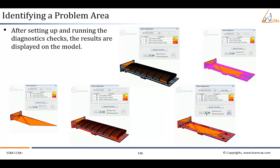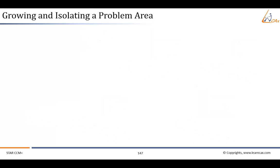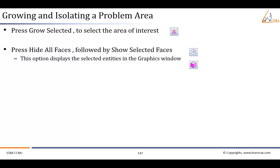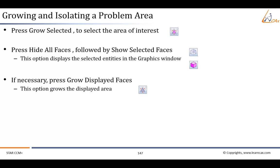Next we have to grow and isolate the problem area. Once you have selected a suitable face, edge, or vertex, you can isolate the error using these standard steps: press 'Draw Selected' to select the area of interest — this option grows the group of selected items but does not affect the underlying displayed items. Press 'Hide All Faces' followed by 'Show Selected Faces' — this option displays the selected entities in the graphics window. If necessary, press 'Grow Displayed Faces' — this option grows the displayed area.